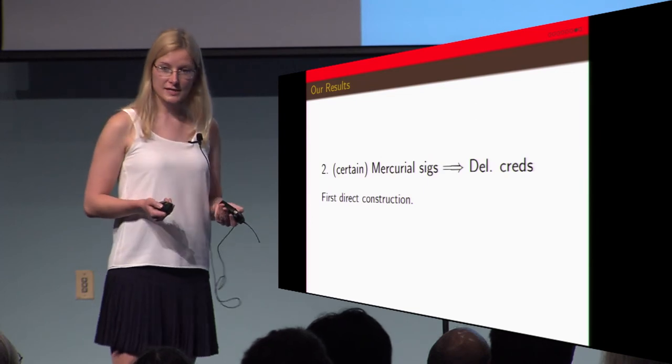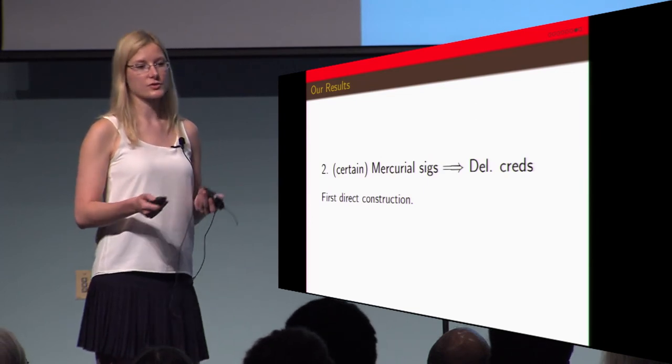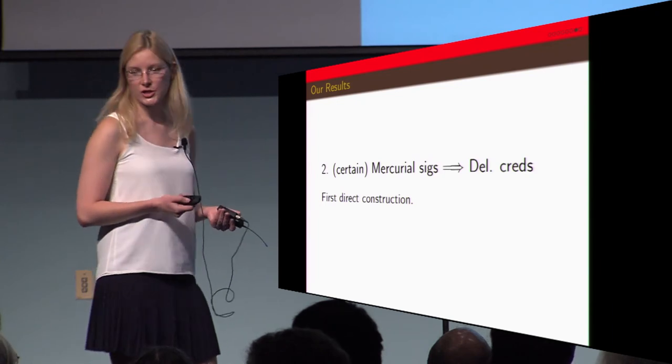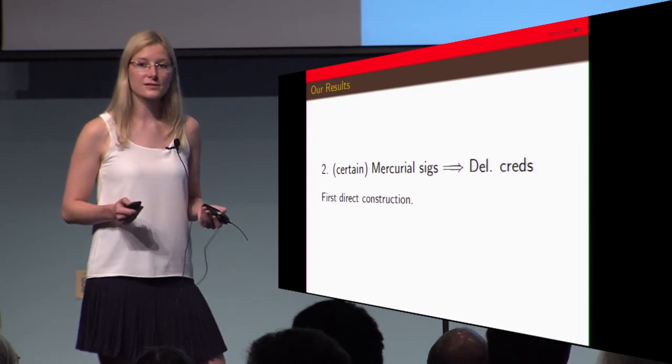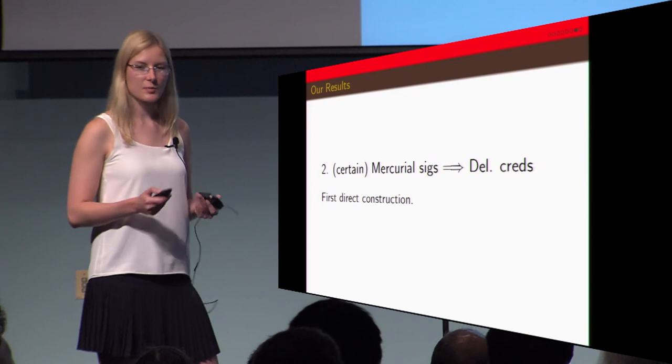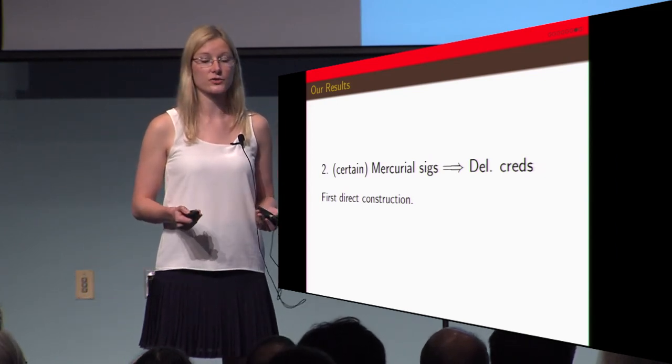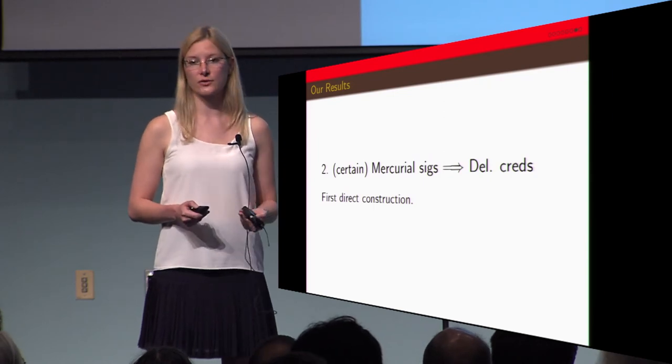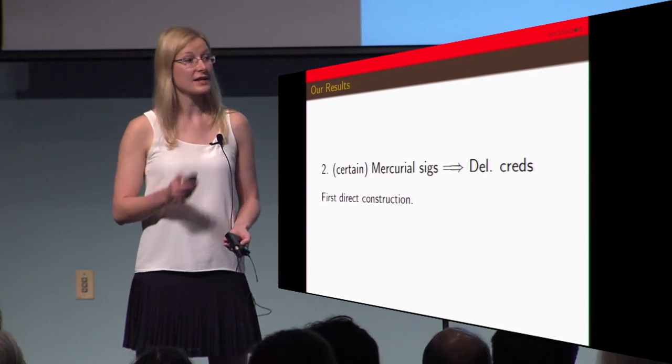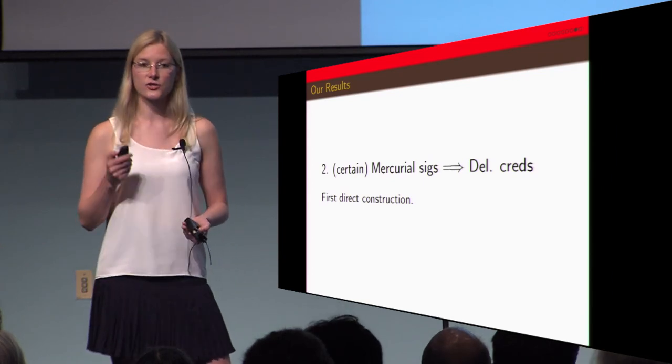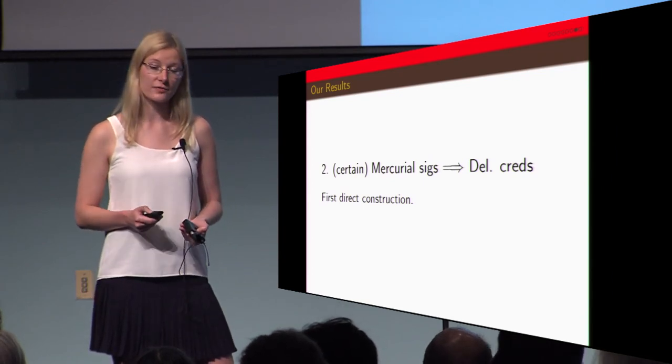Our second result is that for certain Mercurial signatures using the equivalence class that I described before we're able to achieve delegatable credentials. The reason why this is important is that in the seminal paper by Ana and Melissa Chase in 2006 when they introduced delegatable anonymous credentials they had to use a lot of heavy machinery like non-interactive zero knowledge proofs. This is direct. It's quite simple. It's very efficient. Each link in the chain can be represented by only five group elements.